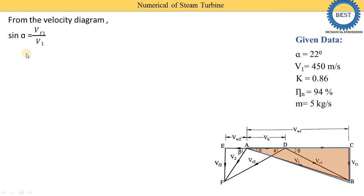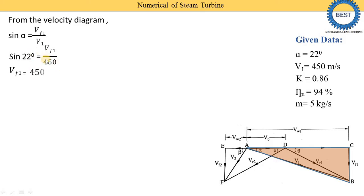First we use the equation of sine alpha. Sine alpha equals the opposite side Vf1 divided by the hypotenuse V1. We have the value of alpha as 22 and V1 as 450. So Vf1 equals sine 22 into 450, and we get the answer: Vf1 is equal to 168.57 meter per second.